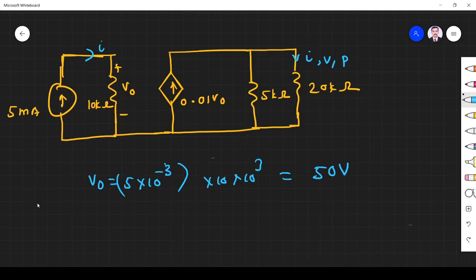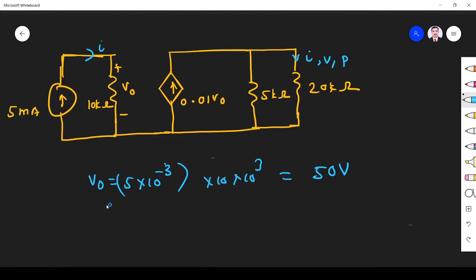V0 50 volt means, what about dependent voltage current source value? I is equal to here 0.01 into V0. V0 is 50. So it is 0.5 ampere. So here 0.5 ampere is coming.